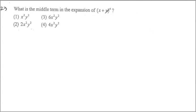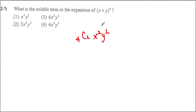What is the middle term? The middle term means x squared and y squared exponents are equal to each other. Then the coefficient is simply 4C2. The 2 matches with the exponent, and out of 4 as the total highest exponent, we get 4C2 equal to 6. So we get 6x²y².